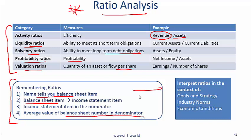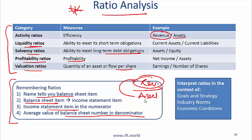With asset turnover ratio, the balance sheet item is always in the denominator and the income statement item is in the numerator. From assets you generate revenue, so the asset turnover ratio is revenue divided by assets. As a general point, ratios need to be interpreted in the context of the goals and strategy of the company. You also need to compare with industry standards and be aware of economic conditions.